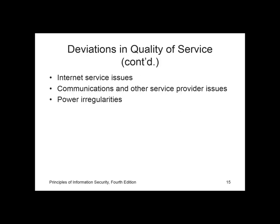For communication and other services, the provider should take care of most issues. Other utility services that can impact the organization include the telephone, water, wastewater, trash pickup, cable television, natural or propane gas, and custodial services. The threat of loss of these services can lead to the inability of the organization to function properly.